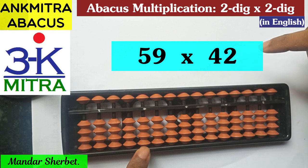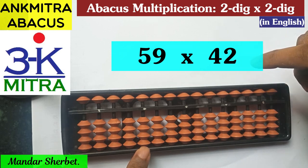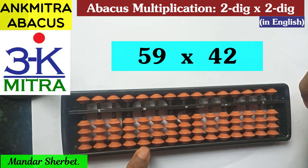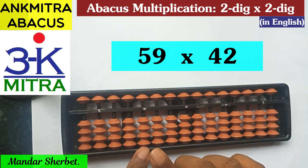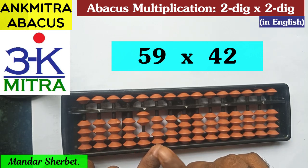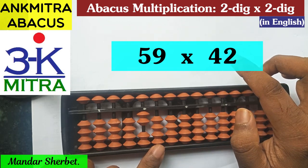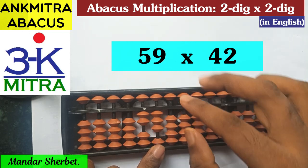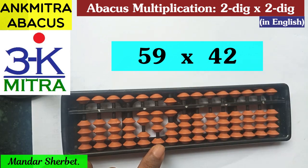The tens place digit of 42 is 4. We'll use this 4 multiplied with each of the digits of 59 in the first step. So 4 multiplied by 5 is our first step — that is 20. We take 20 from this fourth rod: 2 and 0. Then we move one place to the right to the third rod. The next step is 4 multiplied by 9, which is 36. We add 36 from this rod: 30 and 6. The first part of the calculation is now done.